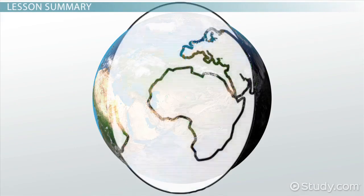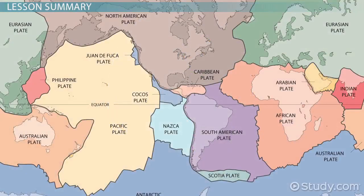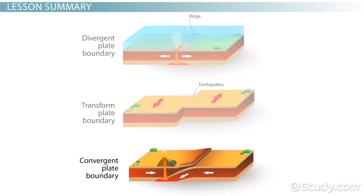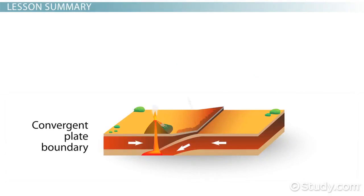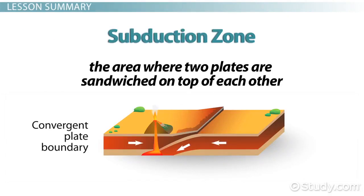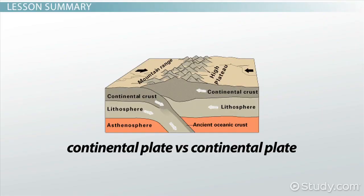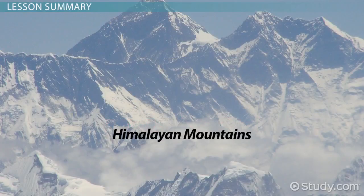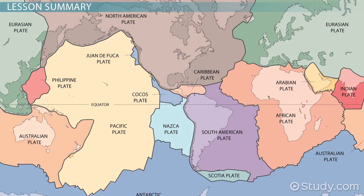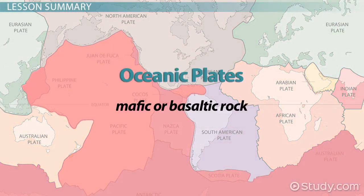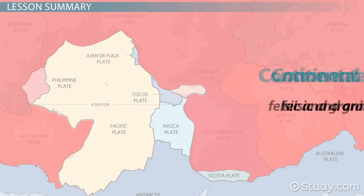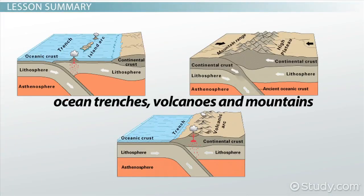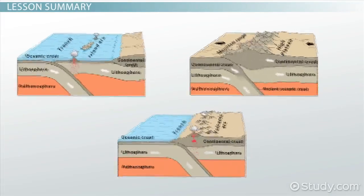The earth's crust can be pictured like an eggshell fractured into many sections, which we call tectonic plates. There are three types of plate boundaries: convergent, divergent, and transform. Convergent boundaries are where two plates are moving towards each other, and this is where subduction zones can be created. A subduction zone is where two plates collide and become sandwiched on top of each other. There are two types of plates — continental and oceanic. Oceanic plates are made of mafic or basaltic rock; continental plates are made of felsic or granitic rock.